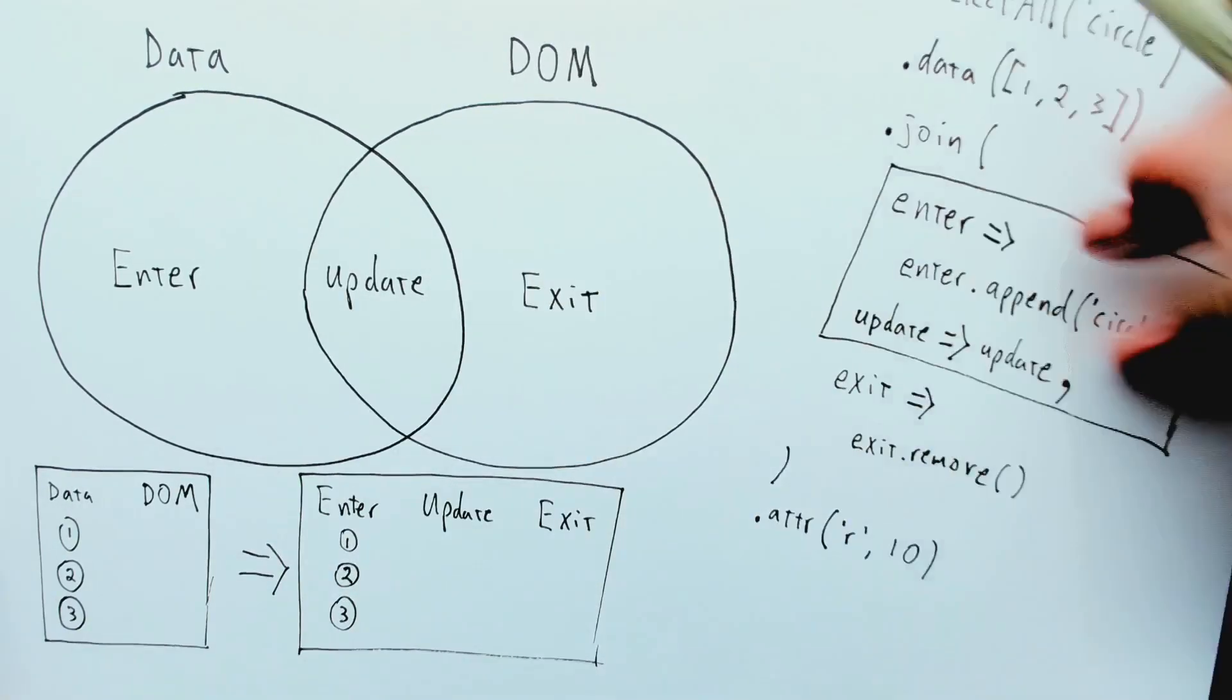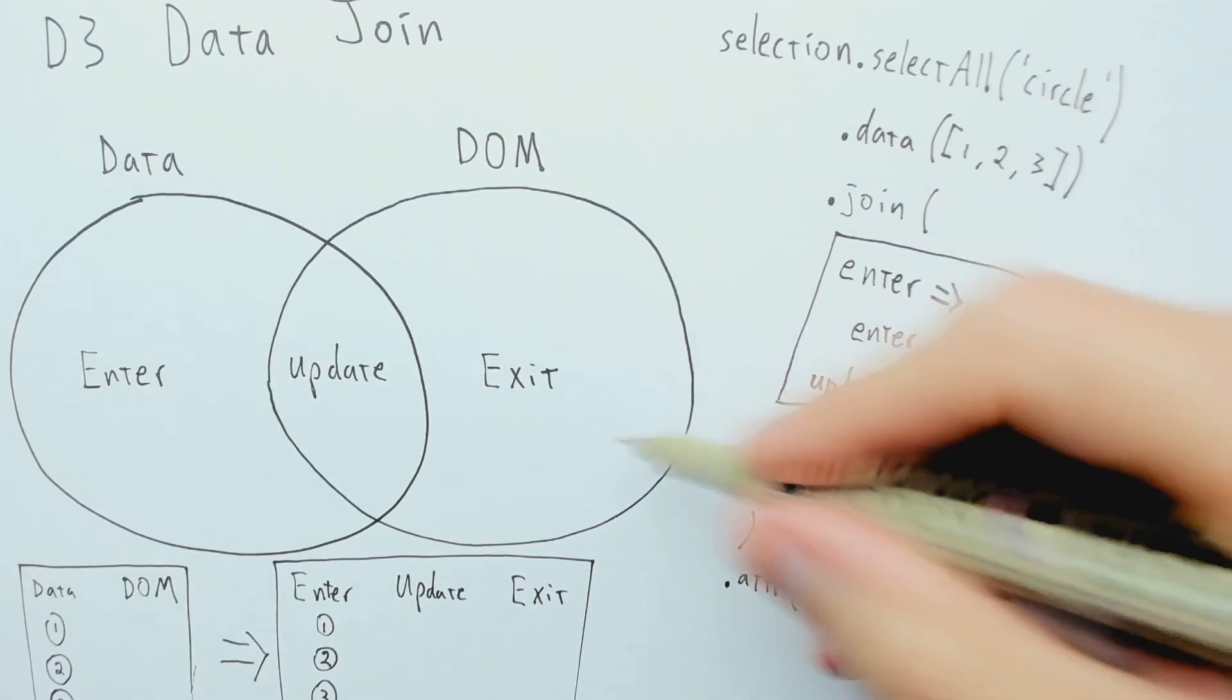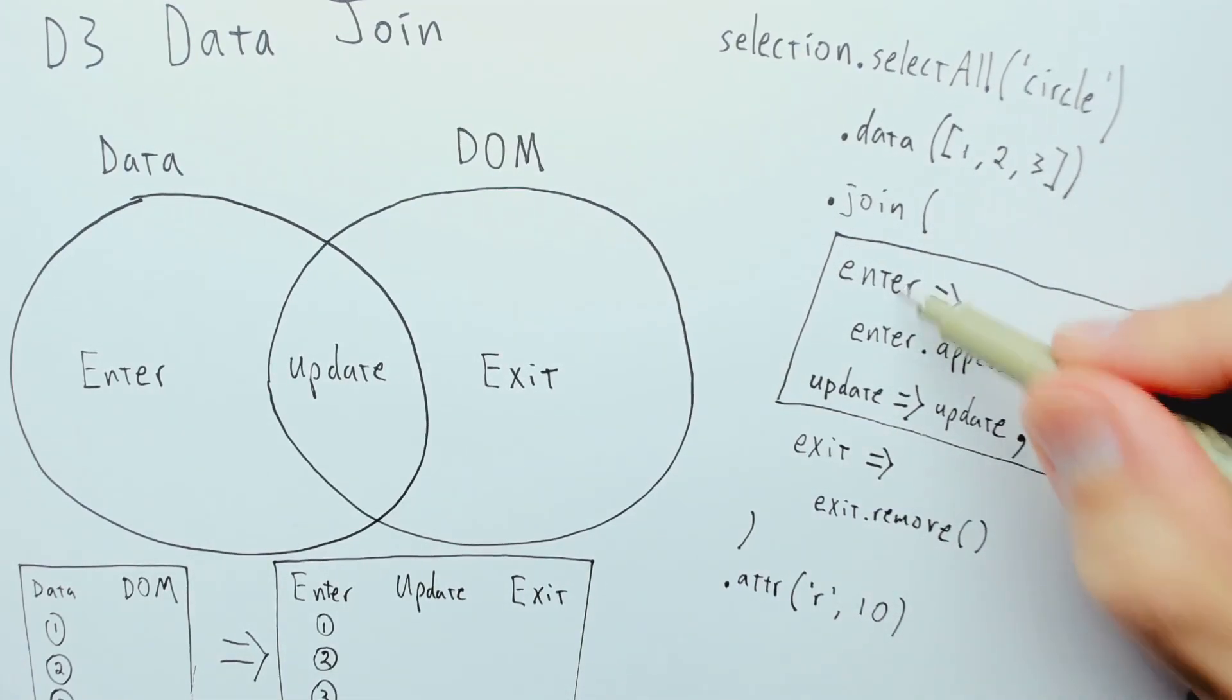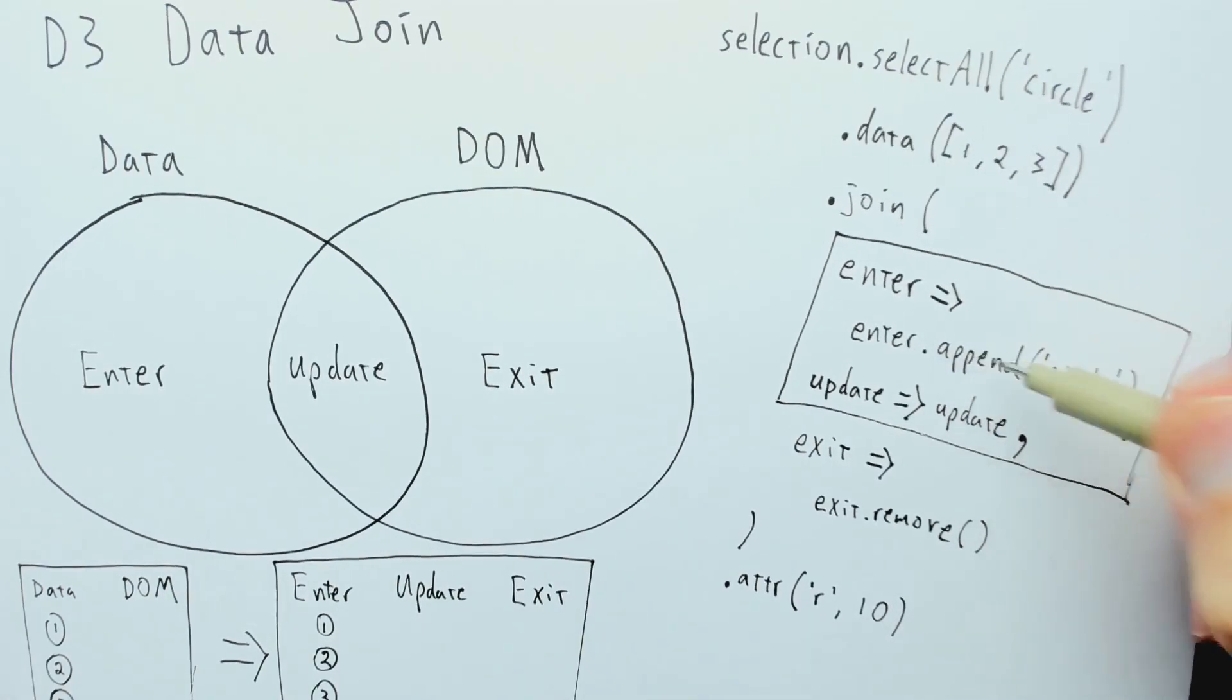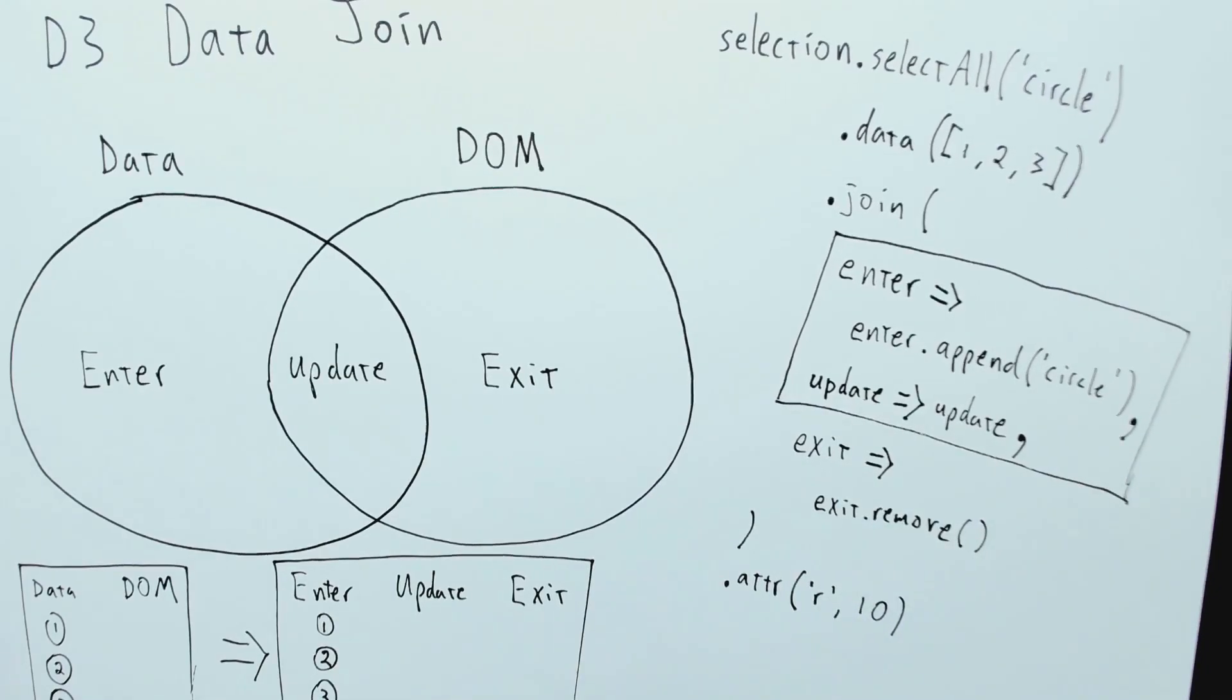That means that the first time this code here runs, it will just append three new circles. And .join will return the merged enter and update selection, which in this case just has the three newly appended circles, and it will set the radius on all of those.